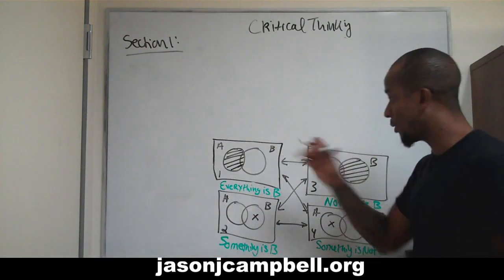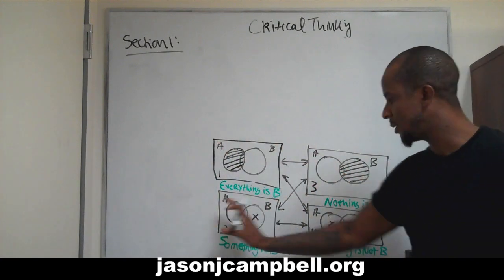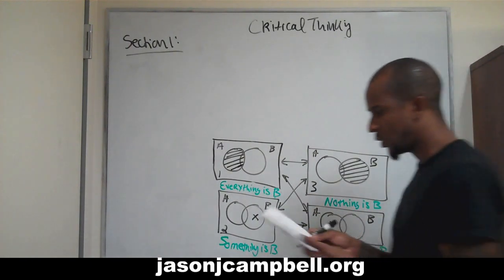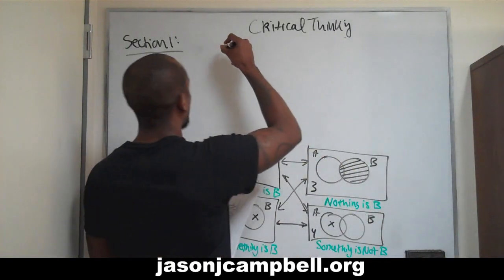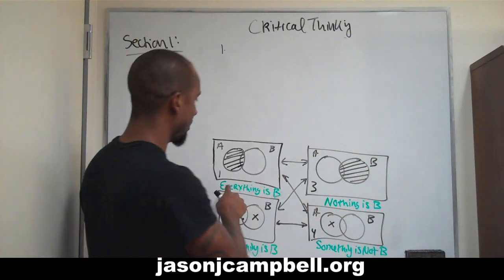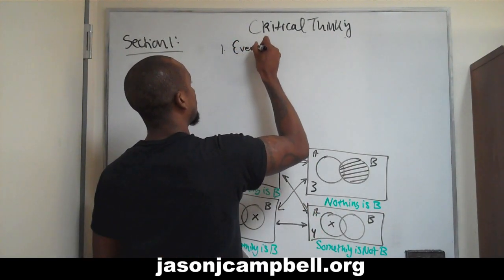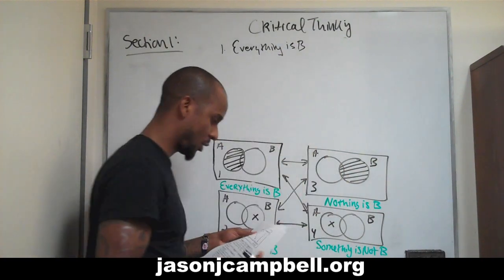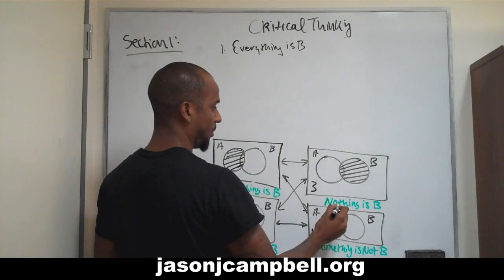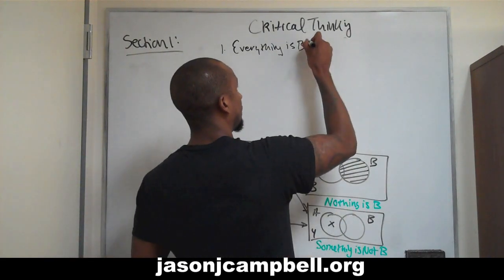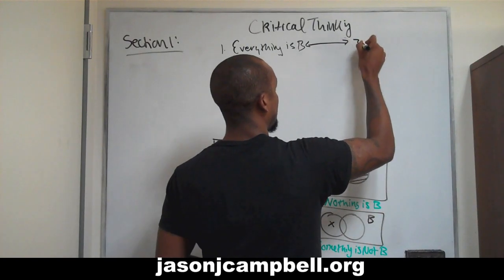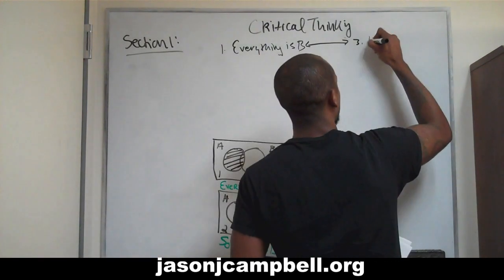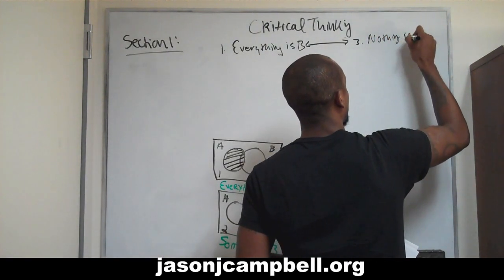What I'm going to do now is get rid of the images, just to make it easier — get the visuals out of the way and just keep the statements. In the upper left corner, we're going to write: 'Everything is B.' And then we see that there's a relationship to number three, so we'll write three: 'Nothing is B.'